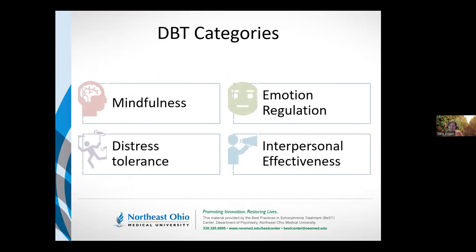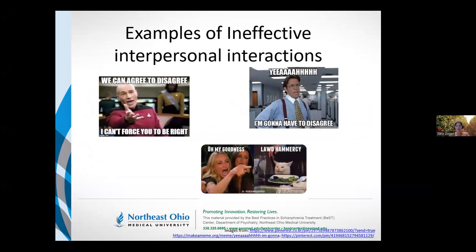As a reminder, our four DBT categories are mindfulness and distress tolerance, which we've done so far. The last two are emotion regulation and interpersonal effectiveness. Our focus for today is on interpersonal effectiveness.